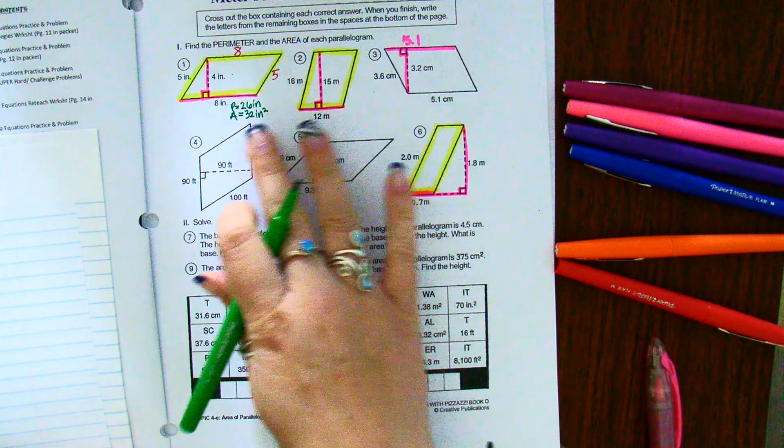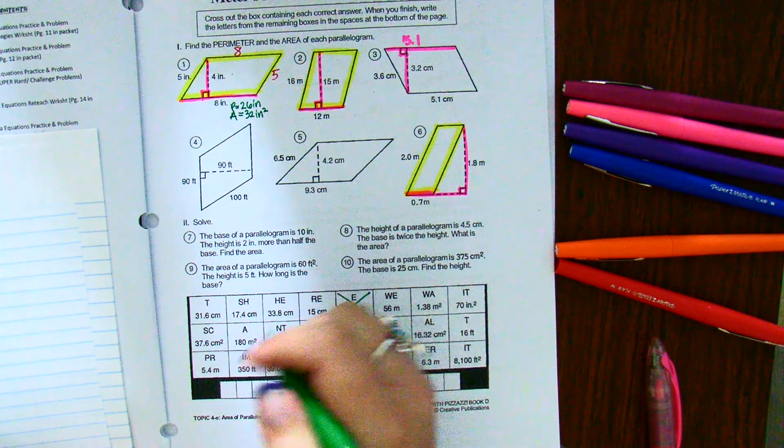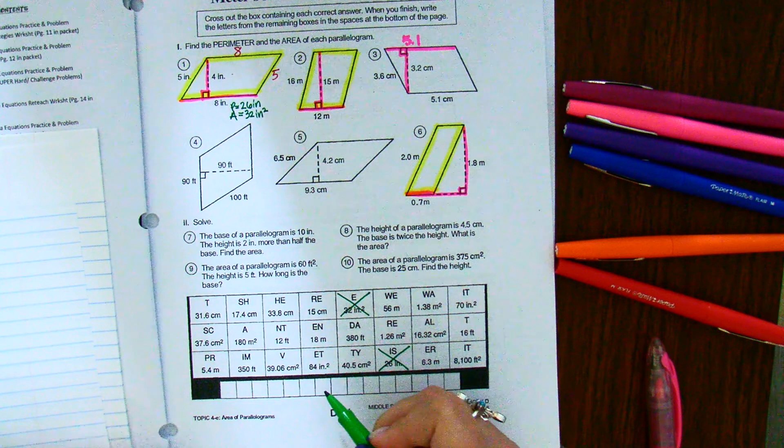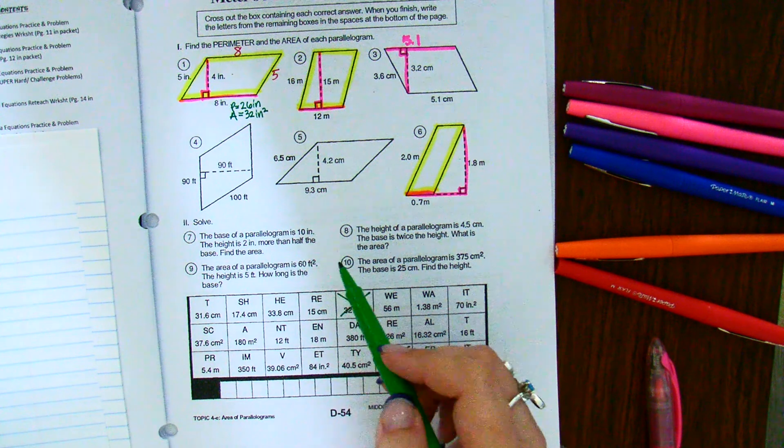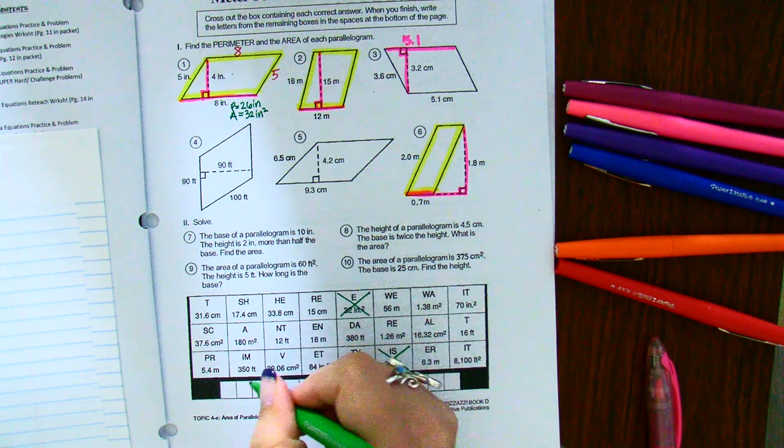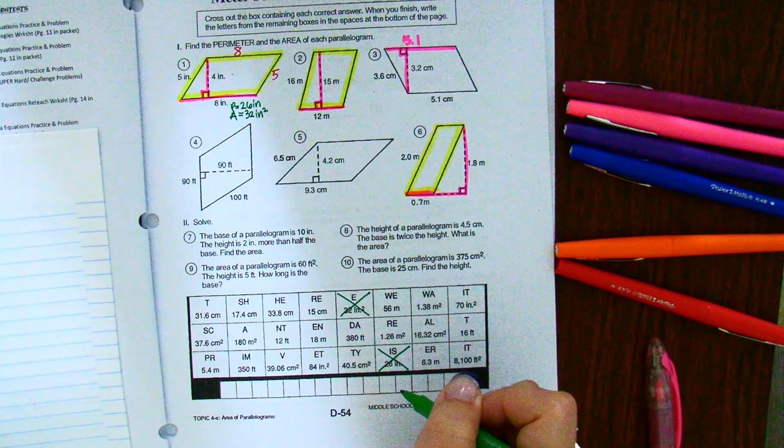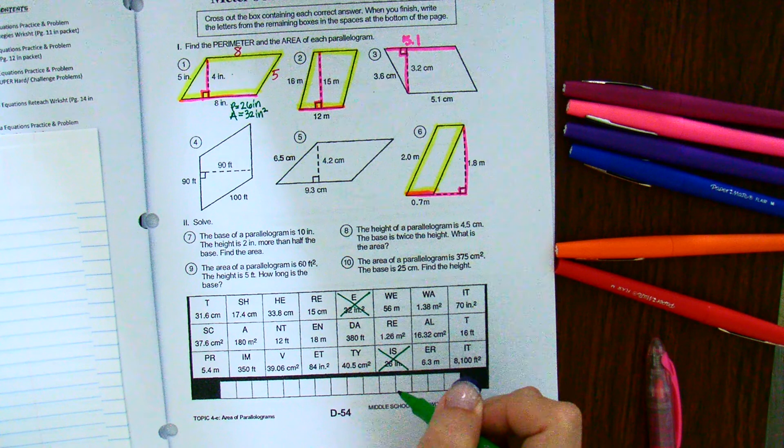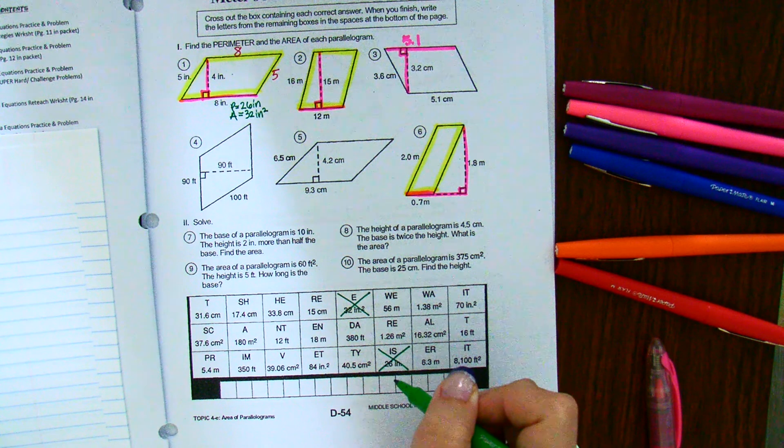Now I'm not going to write anything here until after I'm done with all the other problems. Once you finish all the other problems, then you write down the remaining letter. And then whatever ones are left, that'll answer my riddle at the bottom. So now hopefully you have an idea of how to get started on this. And you can do one through six.